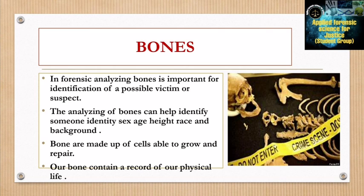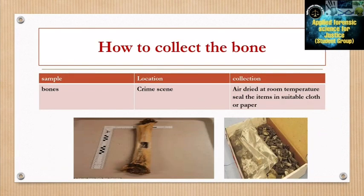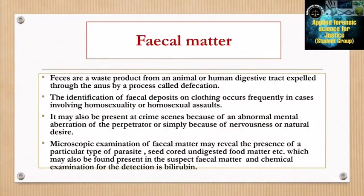In forensic science, analyzing bones is important for identification of possible victims or suspects. Analysis of bone can help identify someone's identity, sex, age, height, race, and background. Bones are made up of cells able to grow and repair, and contain a record of our physical life. To collect bones from a crime scene: air dry at room temperature and seal the items in suitable cloth or paper.